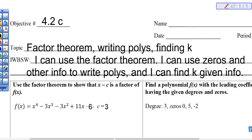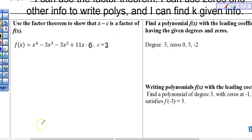Today's lesson is Objective 4.2c — the last part of Objective 4.2. We're covering three interrelated topics. Number one: you can use the factor theorem. Number two: you can use zeros and other information to write polynomials. And number three: you can find K if given some information. Those are our objectives, and we're going to start with the first example.